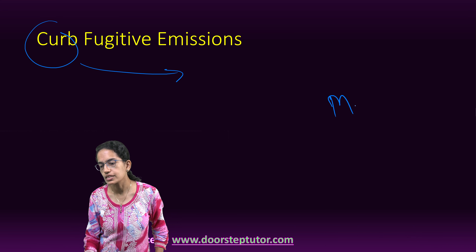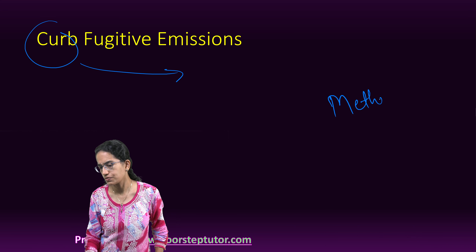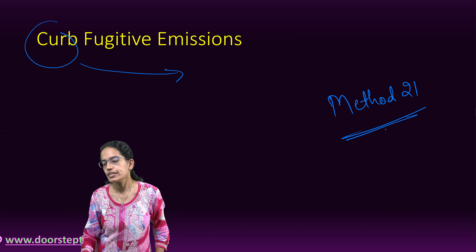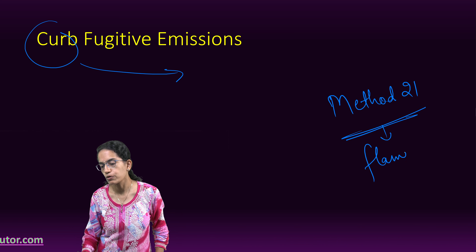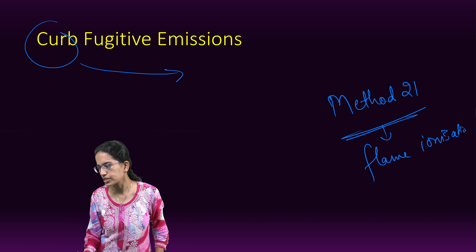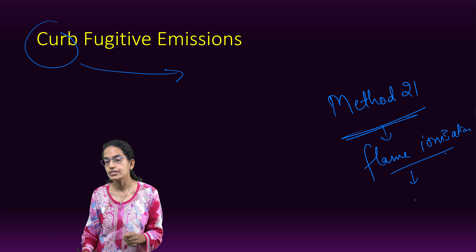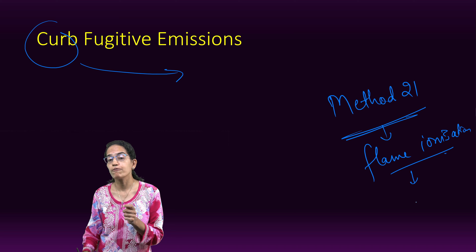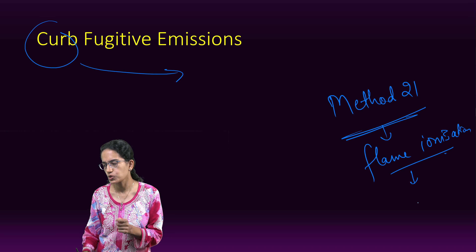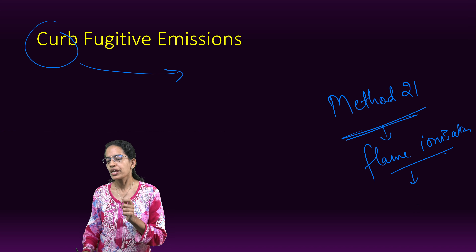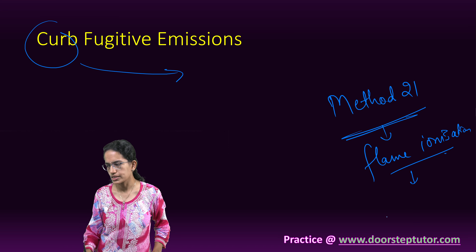There have been certain new methods which have been discovered. Method 21 is one such method, which talks about the flame ionization detector. This flame ionization detector actually has the capability of sniffing out leakage in an industrial setting.